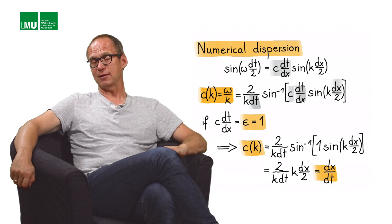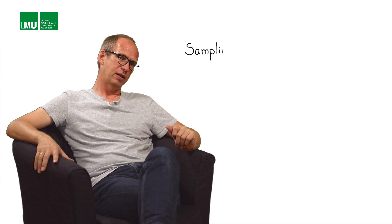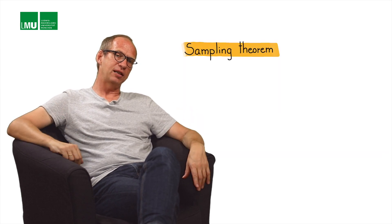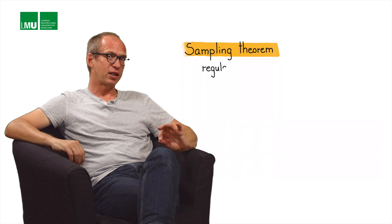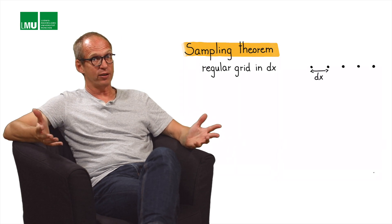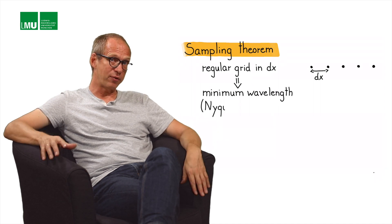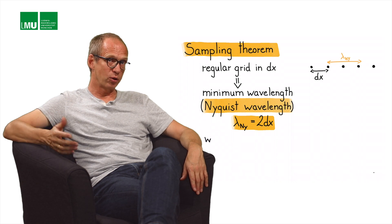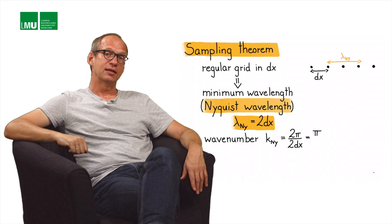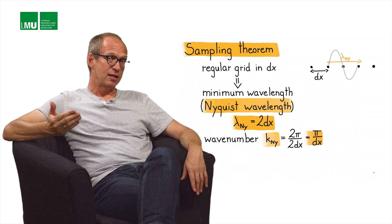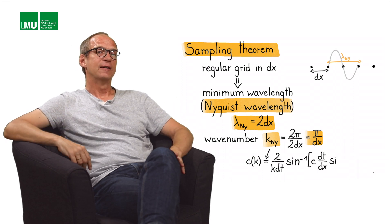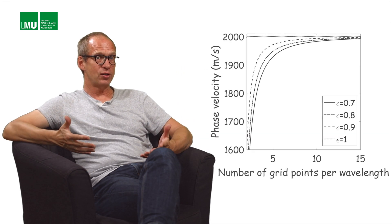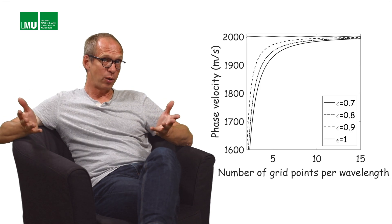To understand the consequences, we look at sampling theory. The minimal wavelength we can describe on a grid with spacing dx is the Nyquist wavelength, 2 times dx. In terms of wave number (2π over lambda), the Nyquist wave number is pi over dx. We can then plot phase velocity as a function of number of grid points per wavelength.